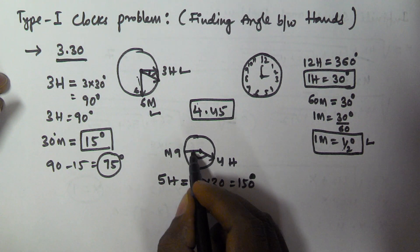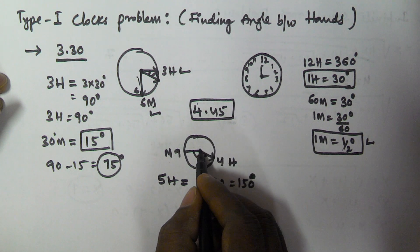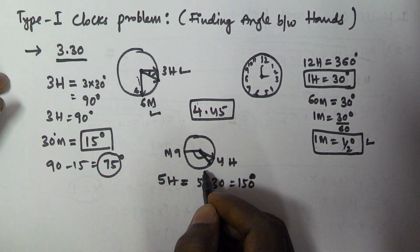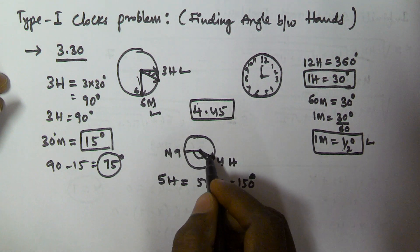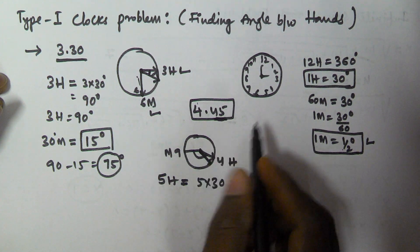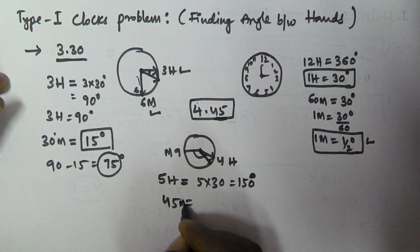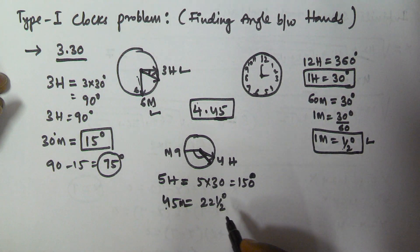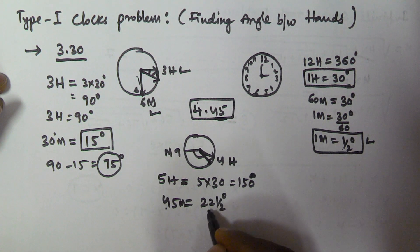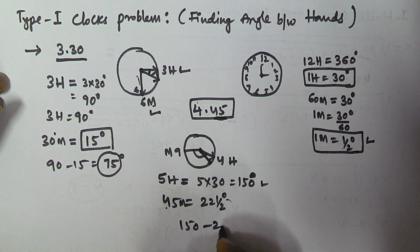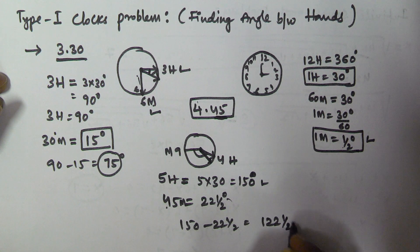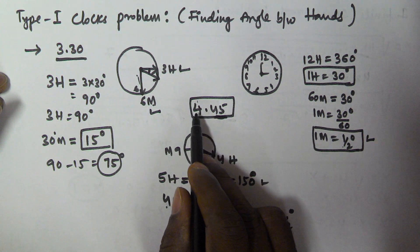But the hours hand is a little bit tilted towards the minutes hand — it is tilted somewhere between 4 and 5. So how many minutes is it tilted? 45 minutes. So 45 minutes is equal to how many degrees? Since 1 minute equals half a degree, 45 minutes equals 22 and a half degrees. So we subtract 22 and a half from 150: 150 minus 22.5 equals 127.5 degrees. This is the angle between the hours hand and minutes hand at the given time 4:45.